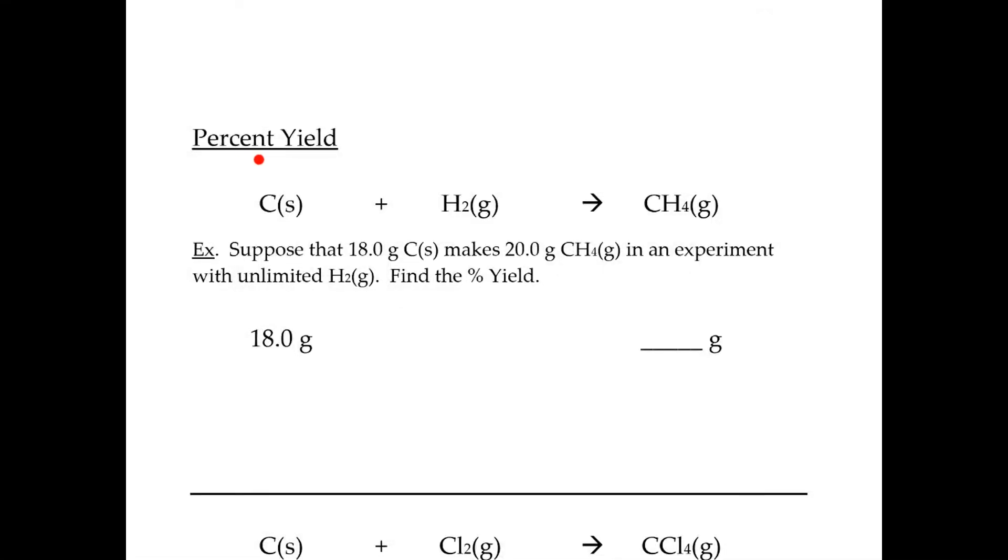Today we're going to be talking about percent yield, which is page 5 of the Chemistry 1 Chapter 12 packet. Percent yield is giving you a percentage of what you made out of what you were supposed to make.